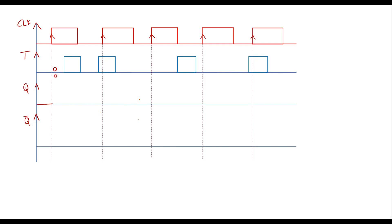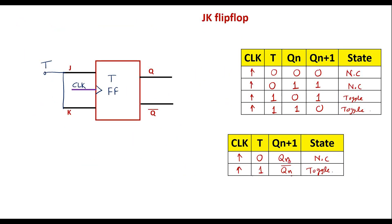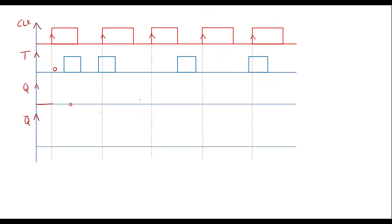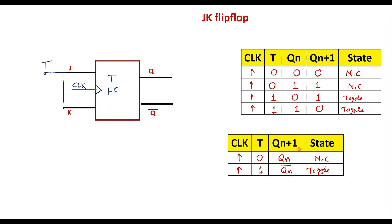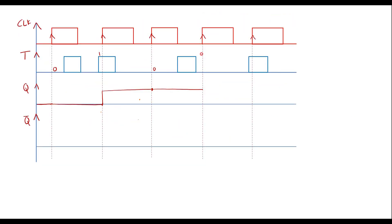When T is 0, there is no change — the flip-flop will follow the same previous output until the next clock pulse. At the next positive edge, T value is 1. When T equals 1, the flip-flop will toggle — here it is 0, so it will become 1, and remain 1 until the next clock edge. At the following positive edge, T equals 0 again — the flip-flop continues in the previous state with no change, since Qn+1 equals Qn when T is 0.